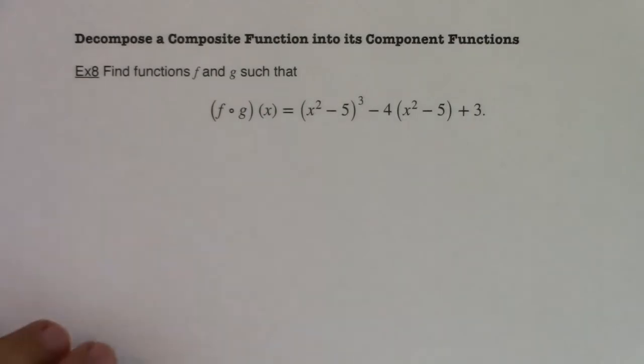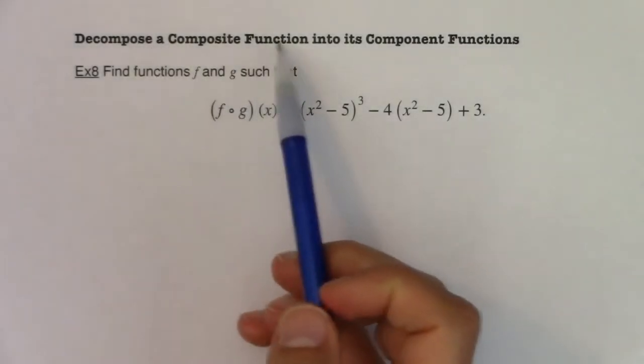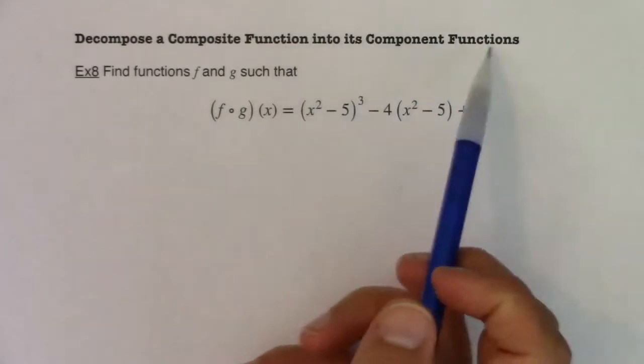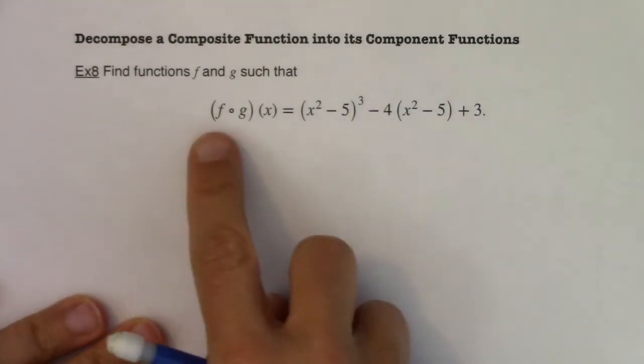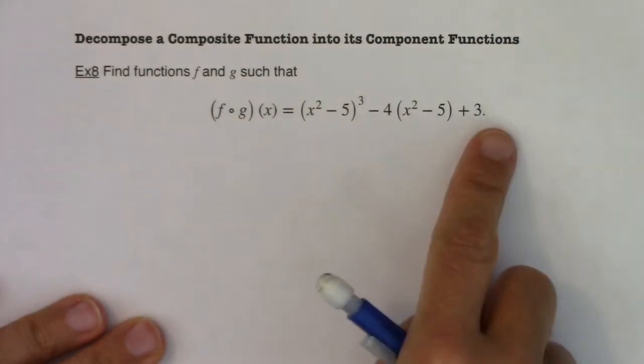Hey, Math 31. Let's decompose some functions, which sounds kind of funky, but we're going to decompose a composite function into its component functions, which means here I'm telling you f of g of x is equal to this polynomial.